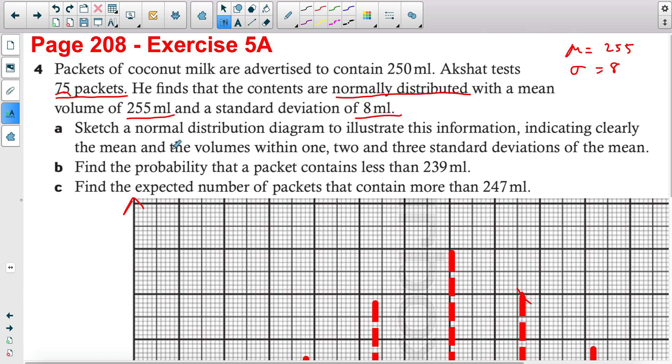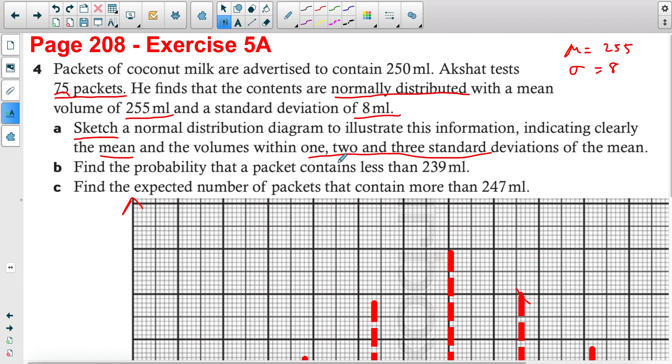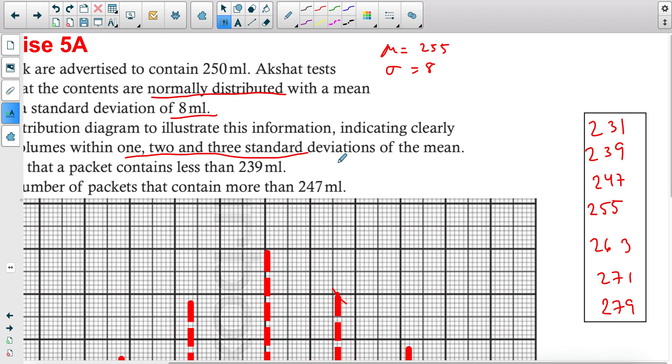The first question is usually sketching. Sketch doesn't have to be an accurate graph, just sketch a normal distribution diagram to illustrate this, indicating the mean and the volumes within 1, 2, and 3 standard deviations of the mean. It's really important that you include all of these. The best recommendation I have is to start listing all your 1, 2, and 3 standard deviations.